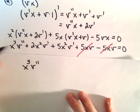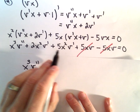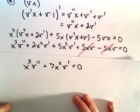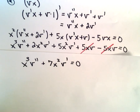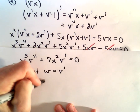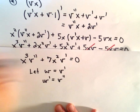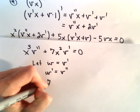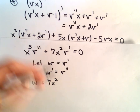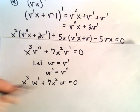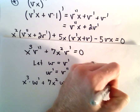We can combine the remaining v prime terms: 2x squared times v prime plus 5x squared times v prime gives us 7x squared times v prime. So we're left with x cubed times v double prime plus 7x squared times v prime equals 0. Now we do our substitution: let w equal v prime, so w prime equals v double prime. This gives us x cubed times w prime plus 7x squared times w equals 0, which is now a first-order homogeneous linear differential equation, and I'm going to solve it by separation.